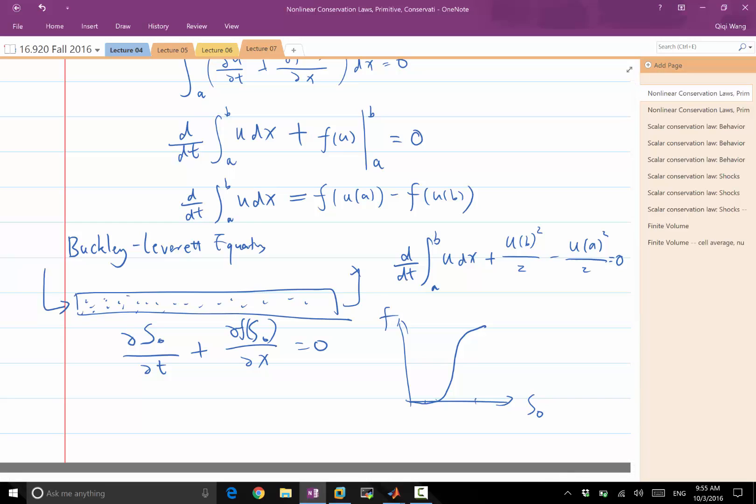And as you approach full saturation equal to 1, everything is oil and water is now trapped into small pores. That makes the flux of oil to be more or less independent of how much water there is, so the curve becomes flat again.